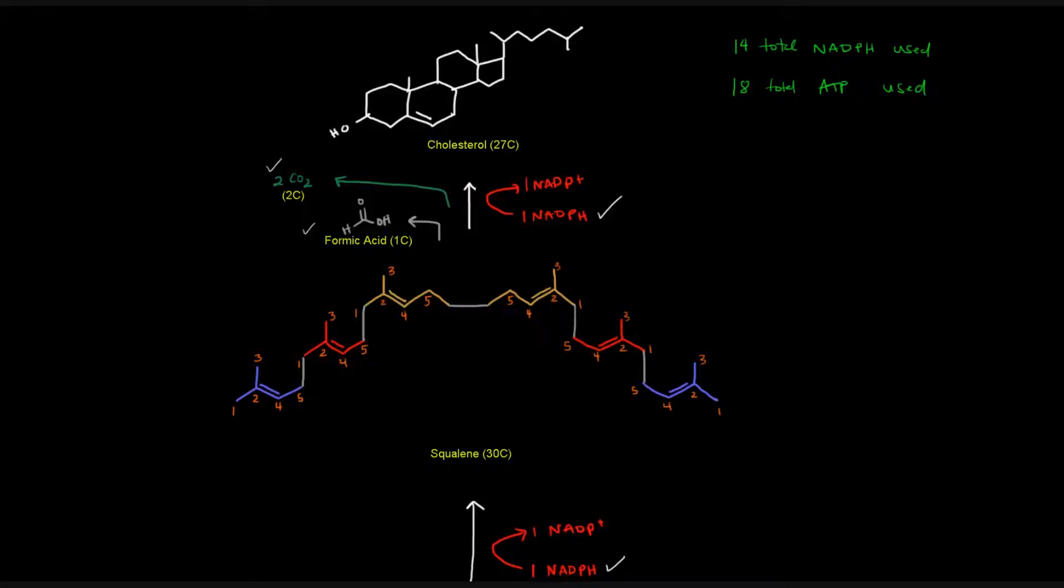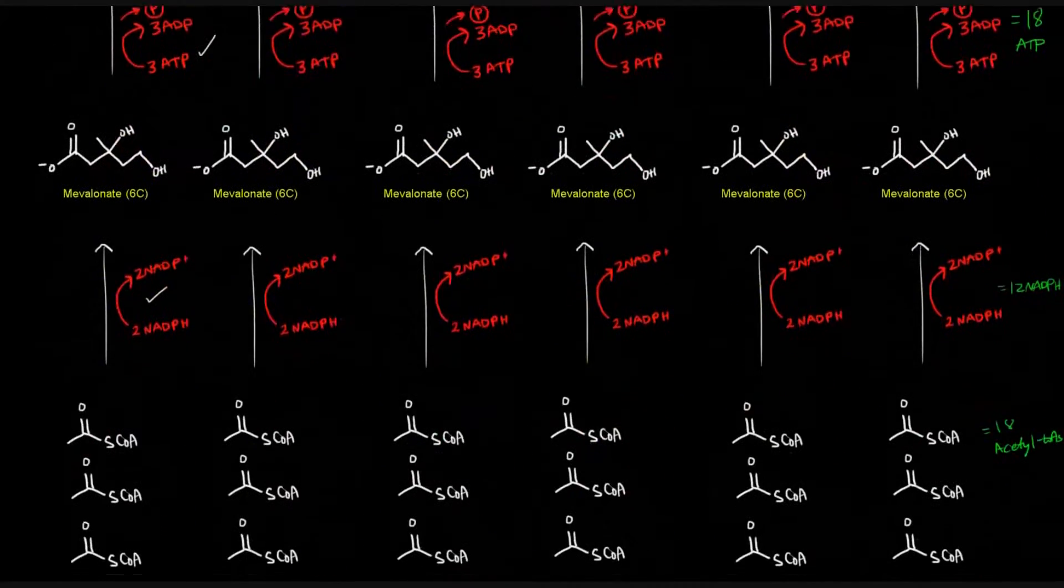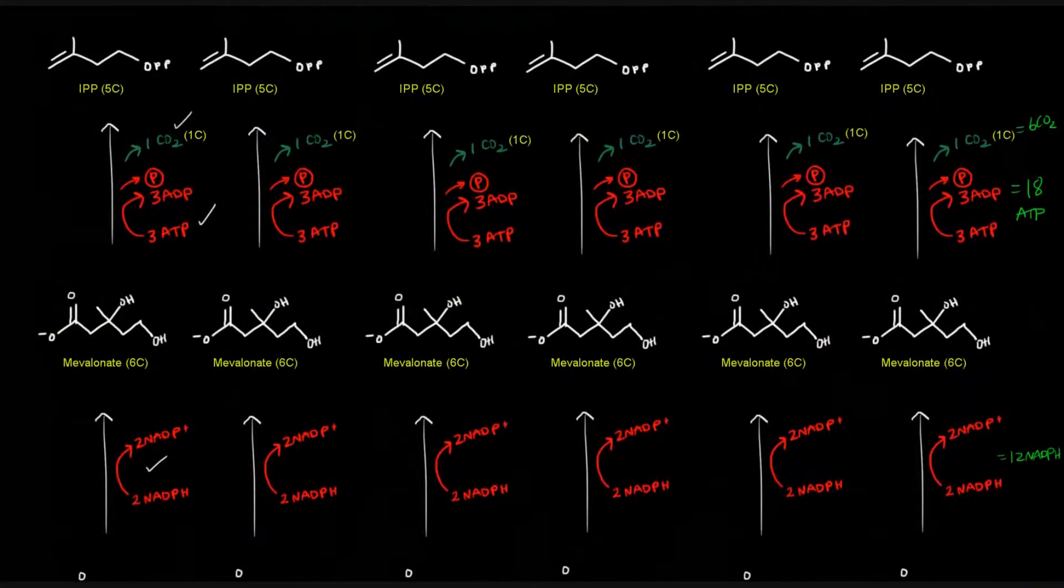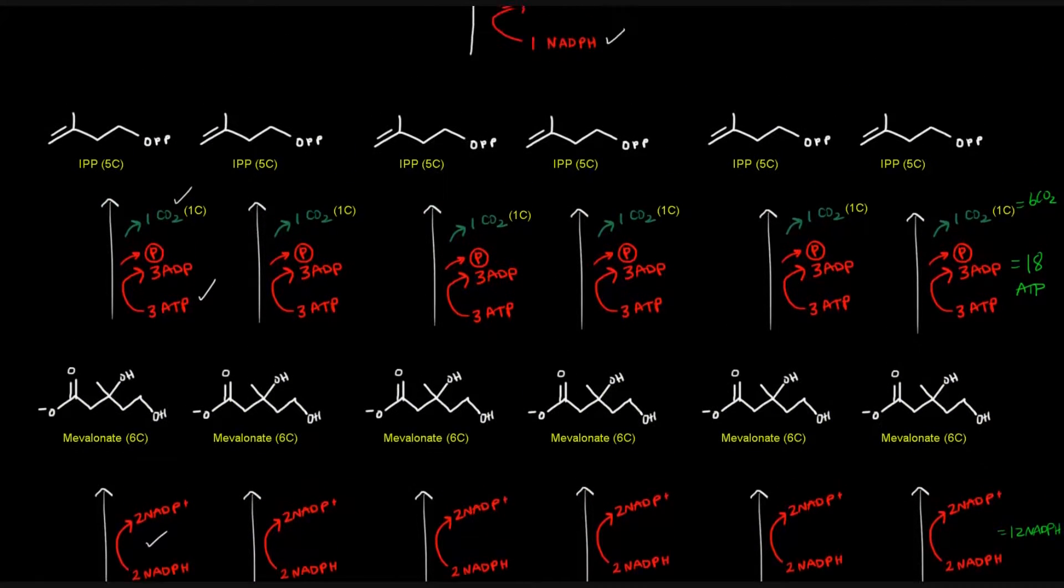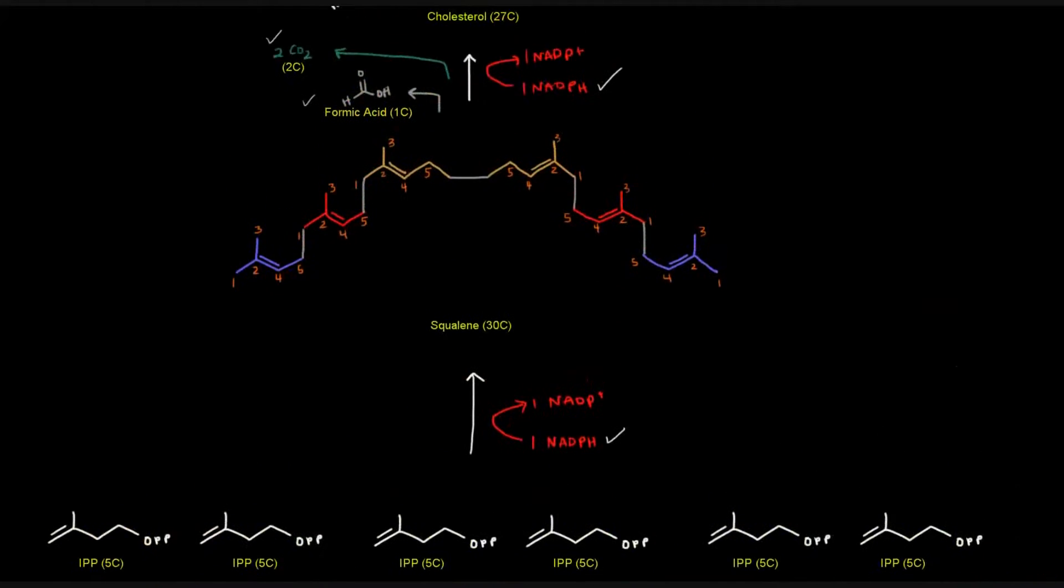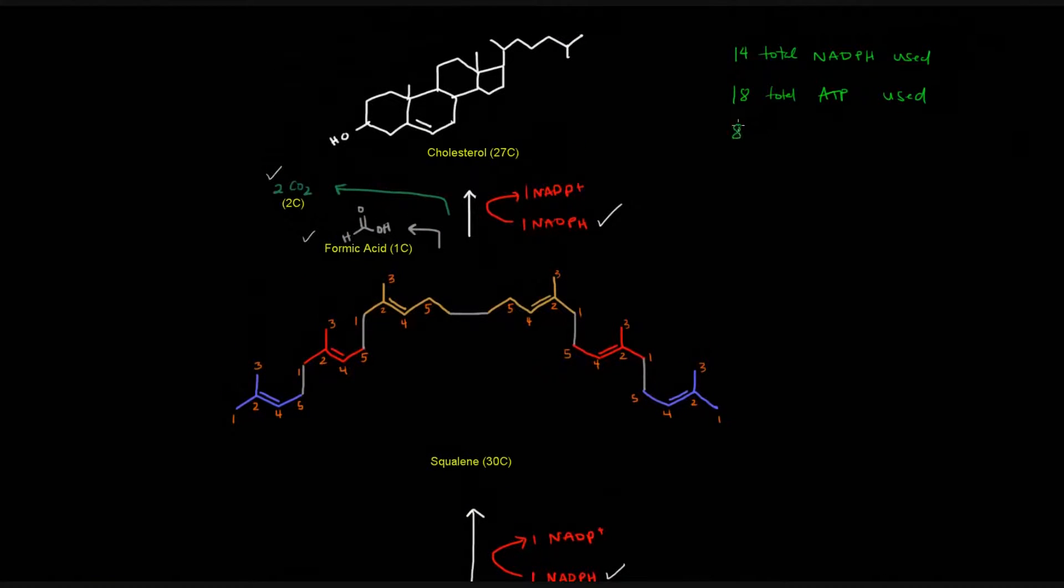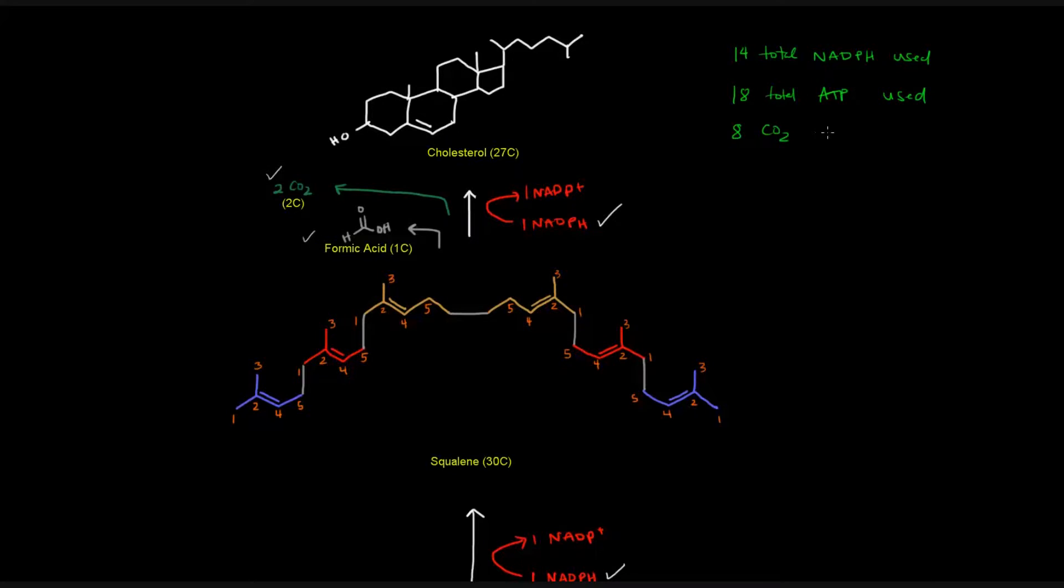And how many carbon dioxides were produced? Well, we had six here going from mevalonate to IPP, and then we lost two up here as well. So that's going to be eight carbon dioxides produced.